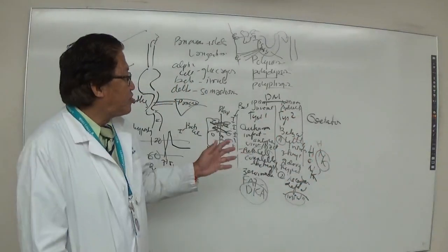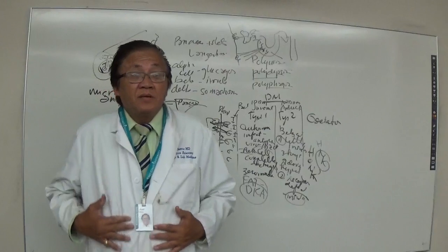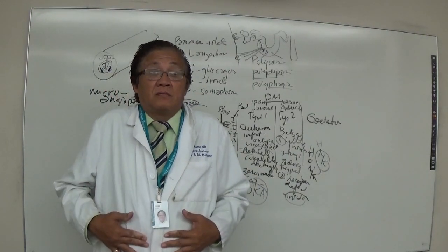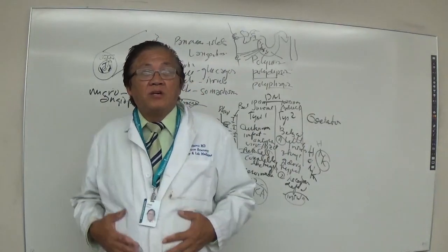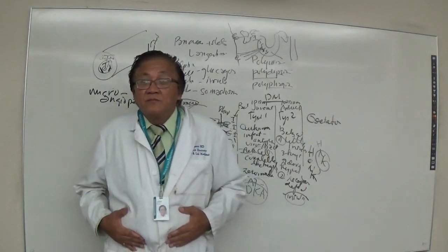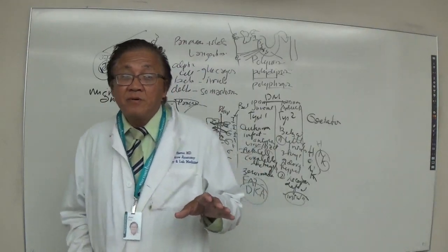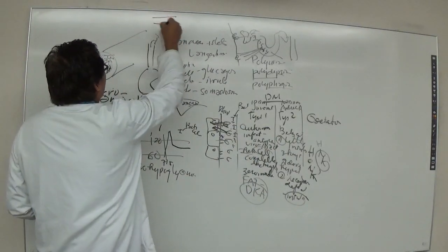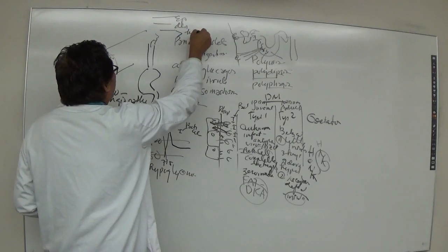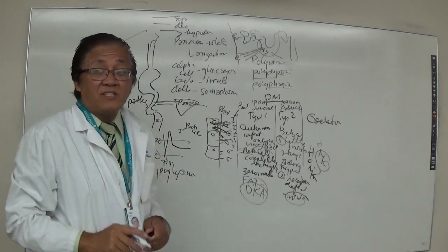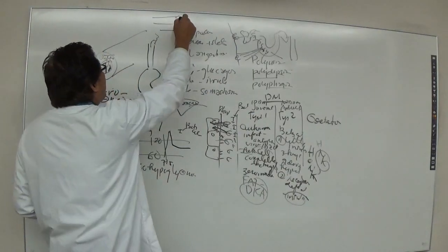For type one diabetes, the treatment of choice is insulin injections. The best place to inject is the abdominal wall — not the stomach. The mode of injection is subcutaneous. The skin layers are the epidermis, dermis, and hypodermis — also called the subcutaneous layer.